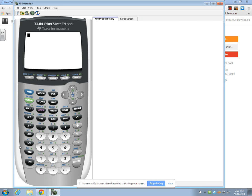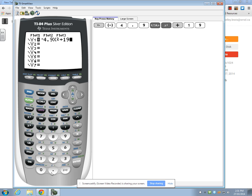First, we have to enter our equation and graph the equation before we can find the x-intercepts. Click on your y equals button and then type in your equation. Our equation today is negative 4.9x squared plus 19.2x minus 5.2.